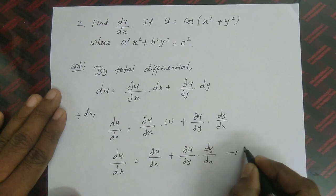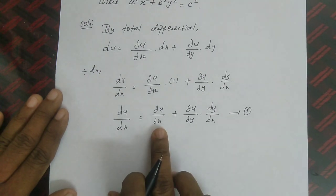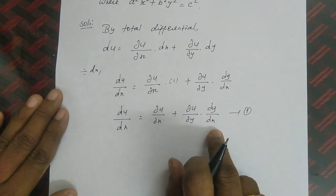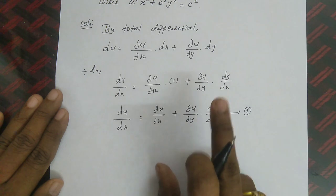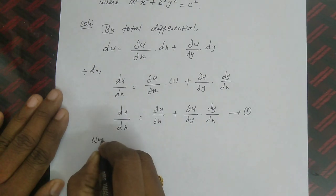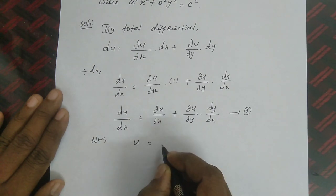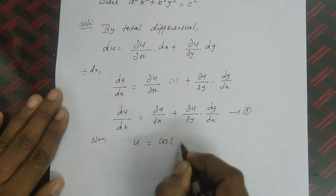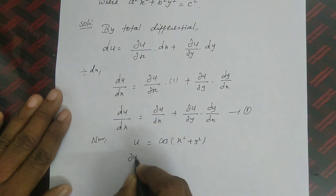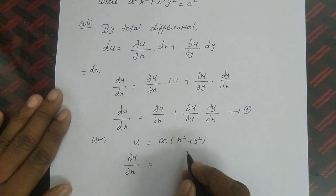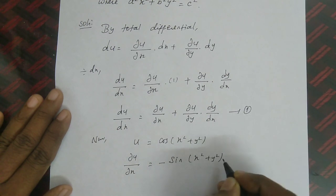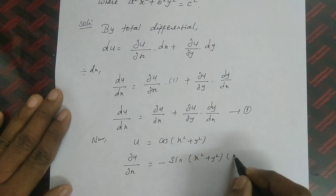Given u = cos(x² + y²). For ∂u/∂x, treating y as constant: differentiation of cos is -sin, so ∂u/∂x = -sin(x² + y²) · 2x. Similarly, ∂u/∂y = -sin(x² + y²) · 2y, since when differentiating with respect to y, x is treated as a constant.